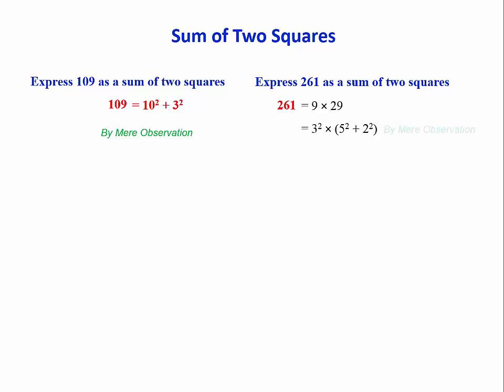by mere observation, we can simply multiply the 5 and the 2 by the 3 outside the bracket and get 15 squared plus 6 squared, using proportionately sutra.